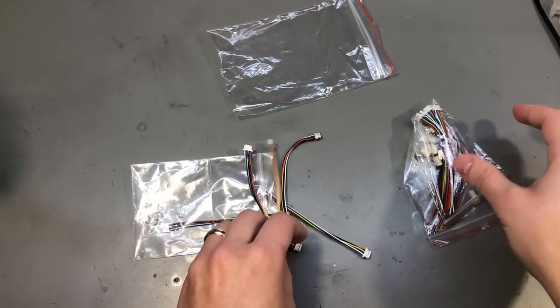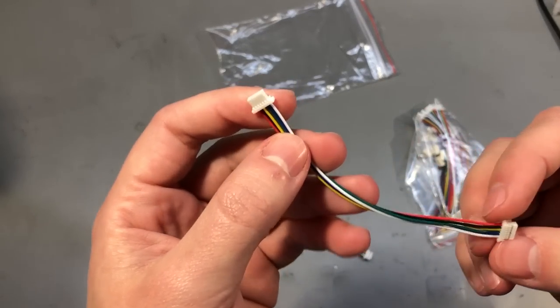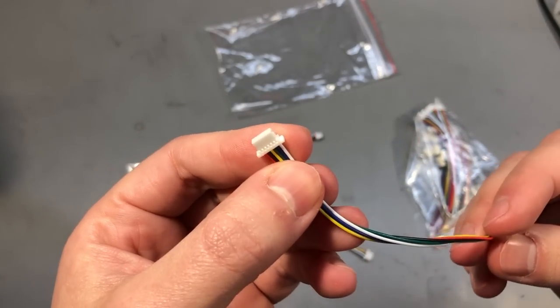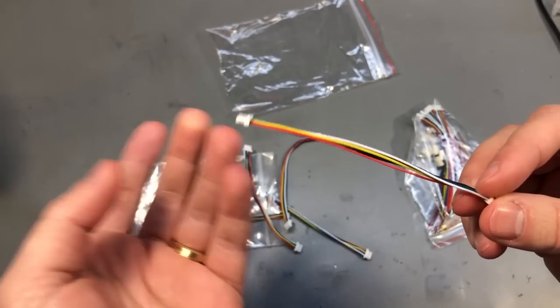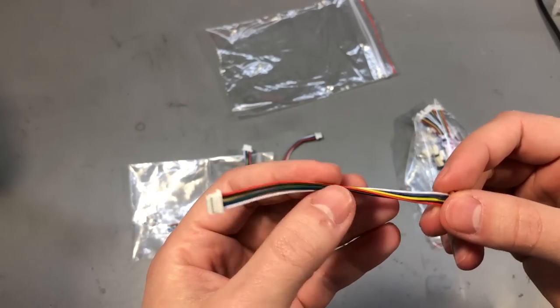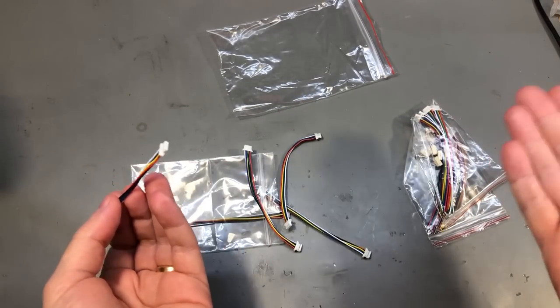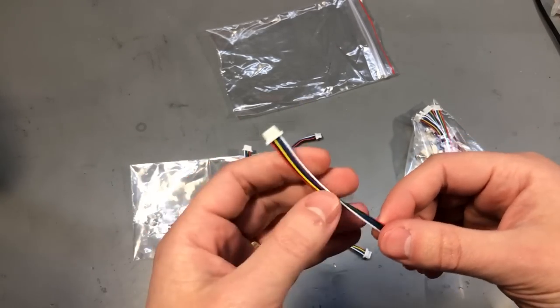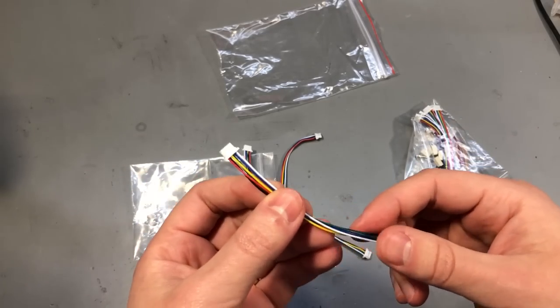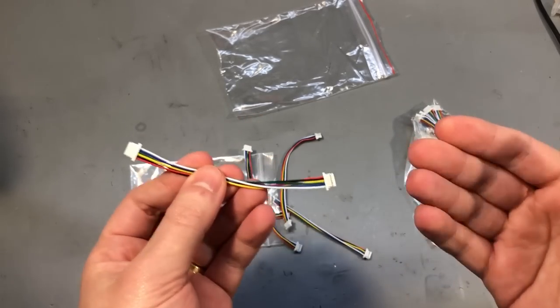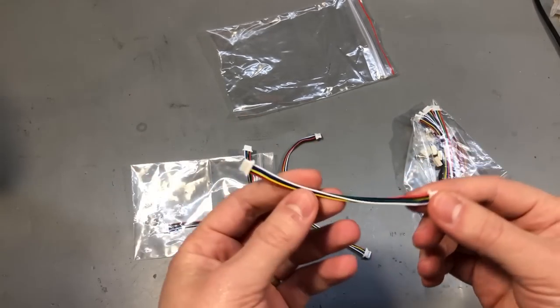These would be pretty difficult to crimp on your own, you would need a very good and precise crimping tool to be able to do these small crimps and it would probably take you too long to do them. But luckily you can find pre-crimped wires, you can find housings in any configuration so you can build your own cables pretty easily these days or you can buy these ready-made ones like I did.